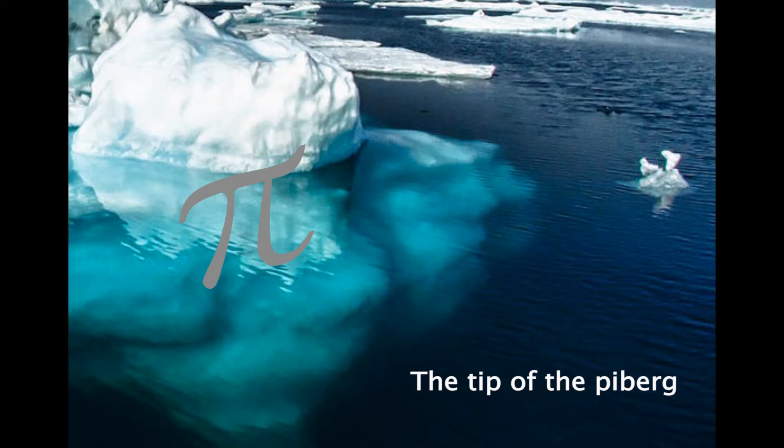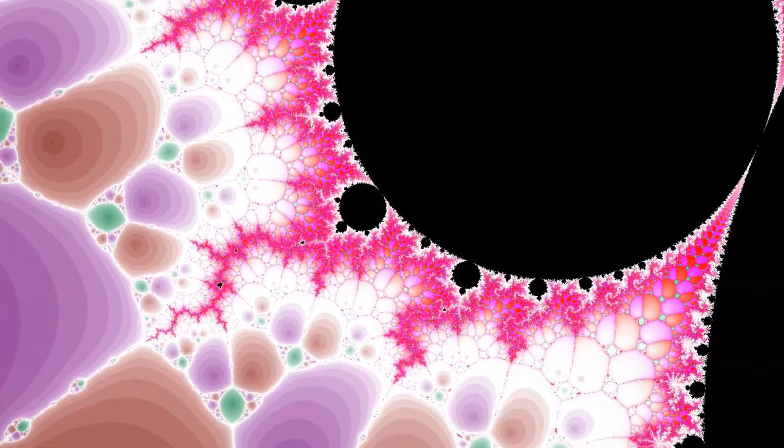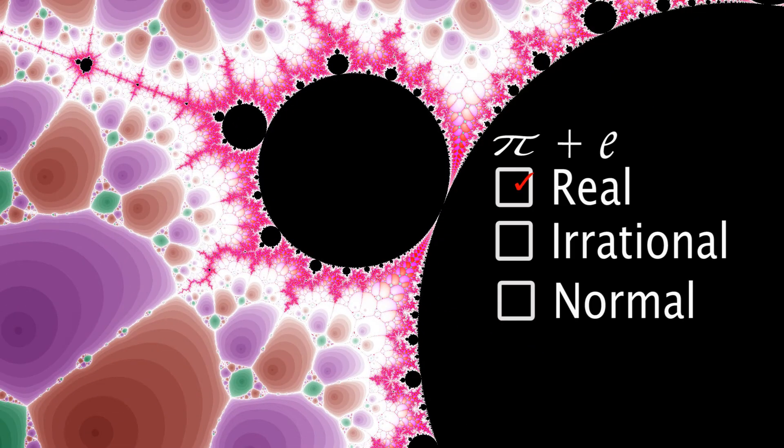Unfortunately, we know surprisingly little about Pi. Yes, Pi has been calculated to over a trillion digits, but what is a trillion digits when compared to infinity? In fact, it is still unknown whether the sum of Pi and E is irrational or not.